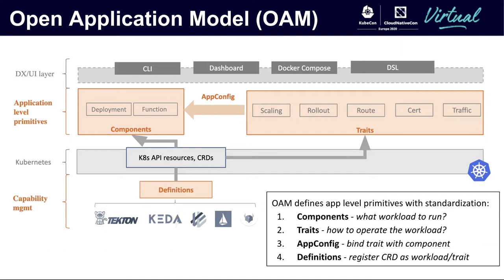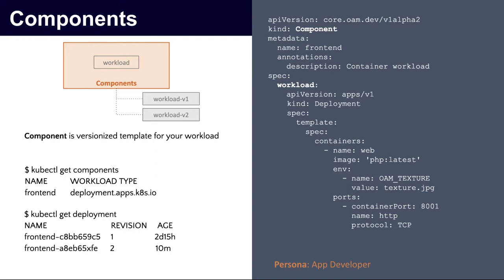Traits are also where abstractions mostly happen if you want to improve the user experience. The third concept is Application Configuration — a YAML file that explicitly binds traits to certain components, so you clearly know the topology of your app instead of tracking them by labels or other unstructured approaches. The last and most important concept is definitions. They are used to register a CRD or any Kubernetes API resource as a workload or trait.